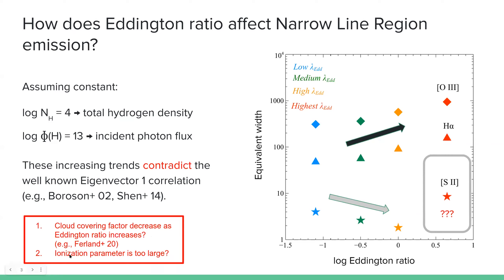Or maybe the second, maybe our ionization parameter is too large for the input because we choose specifically this value where this combination of total hydrogen density and incident photon flux produce the strongest O3 emission.